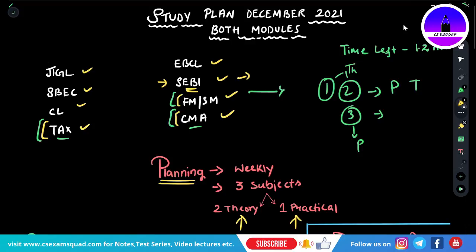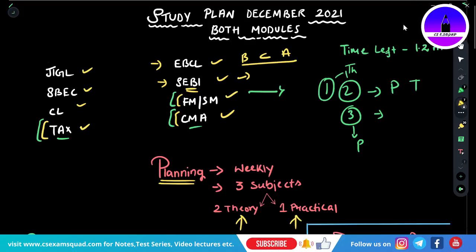After SEBI, for EBCL start with Part B, then Part C, then Part A. Follow this format and you'll be benefited at the end of your examination.